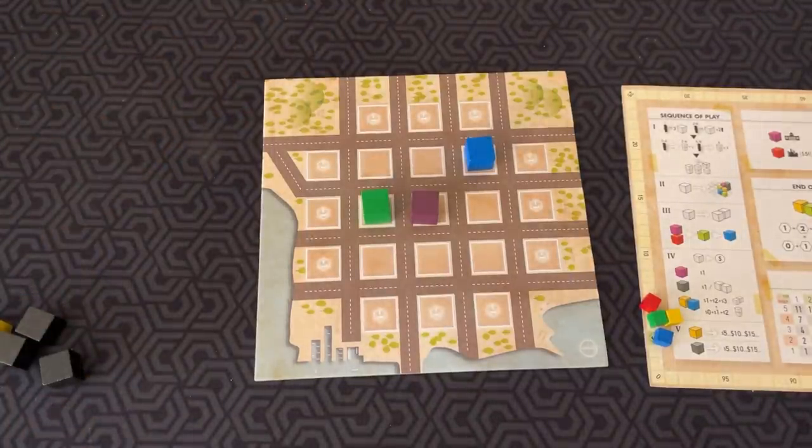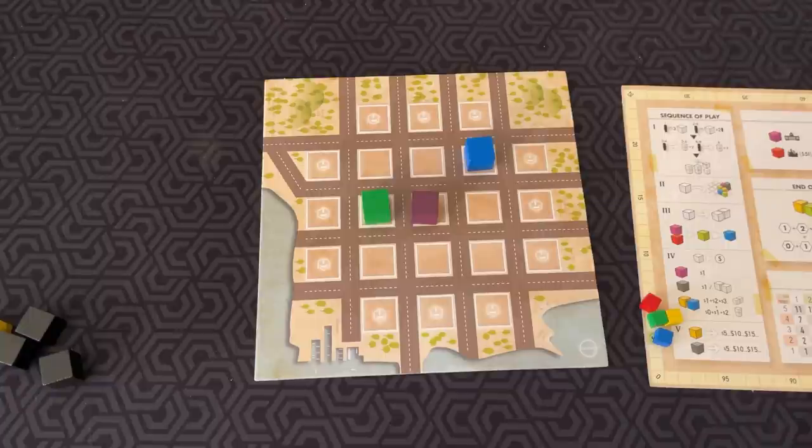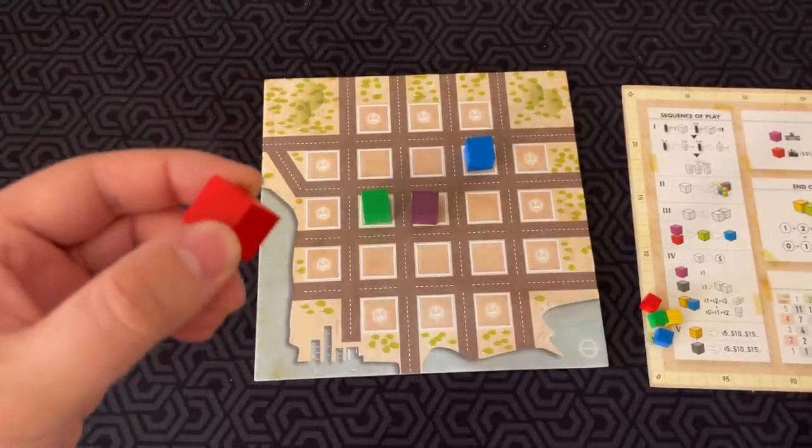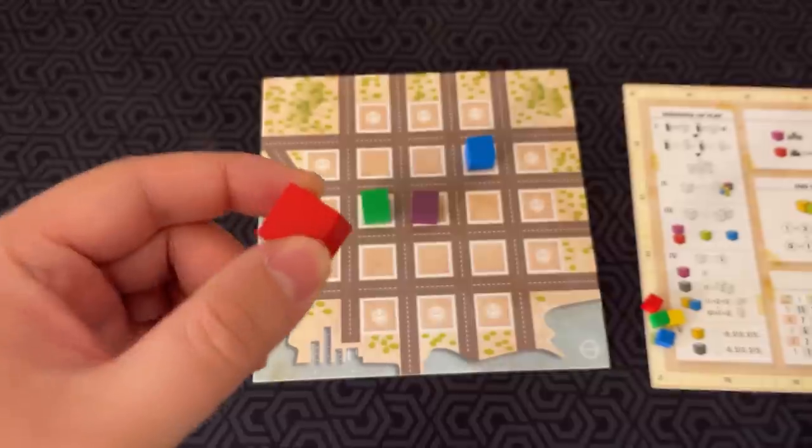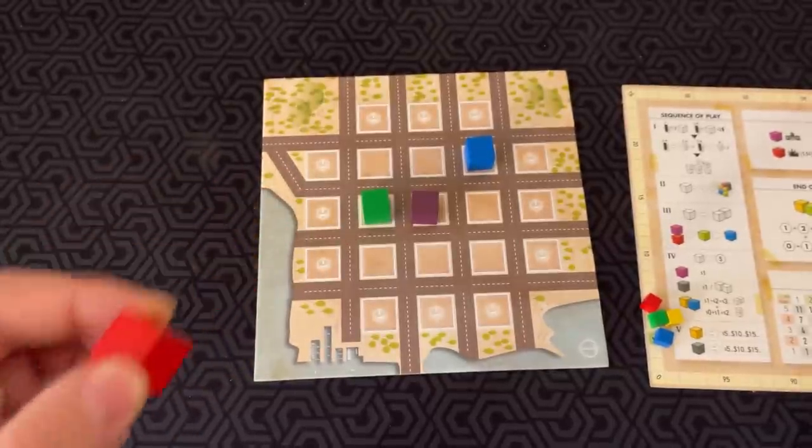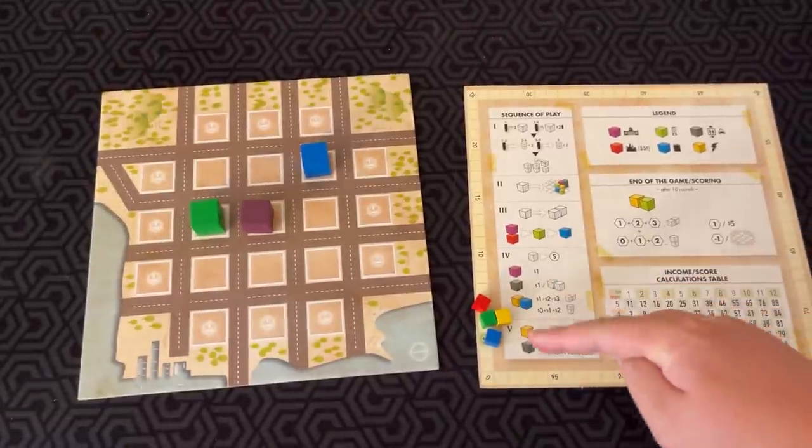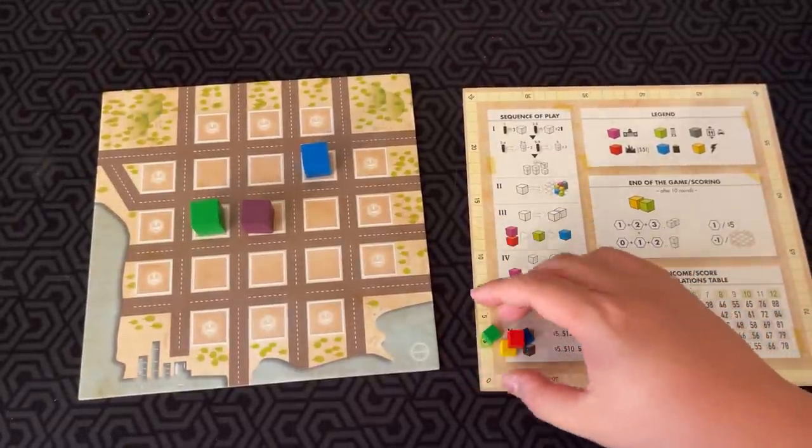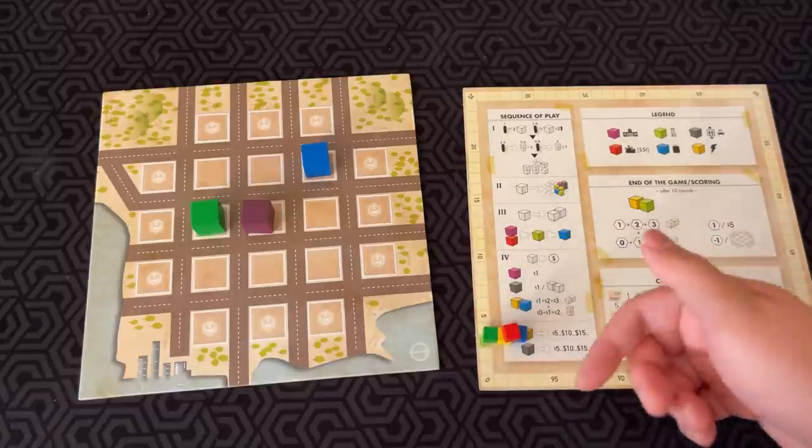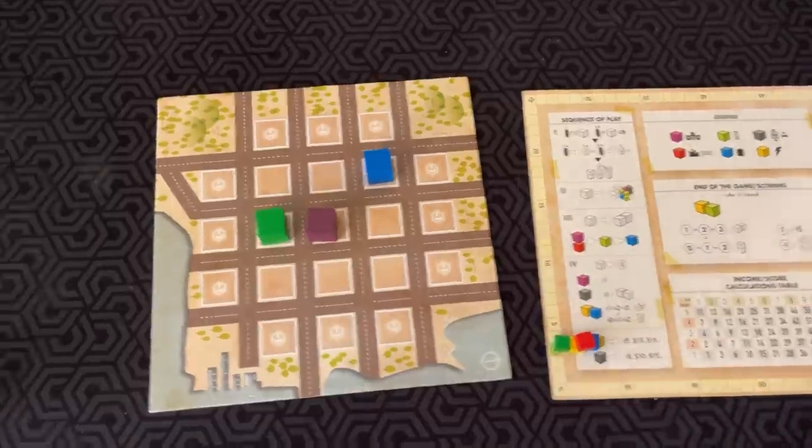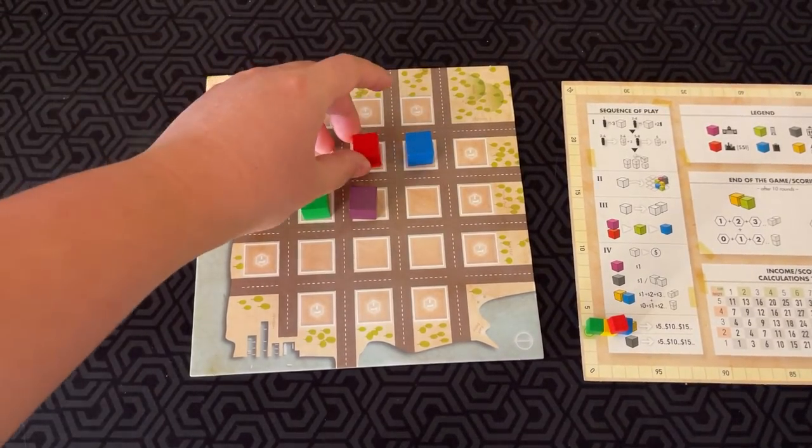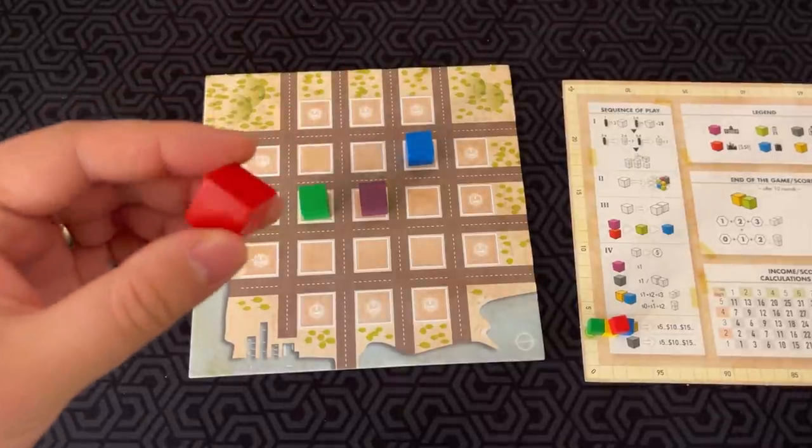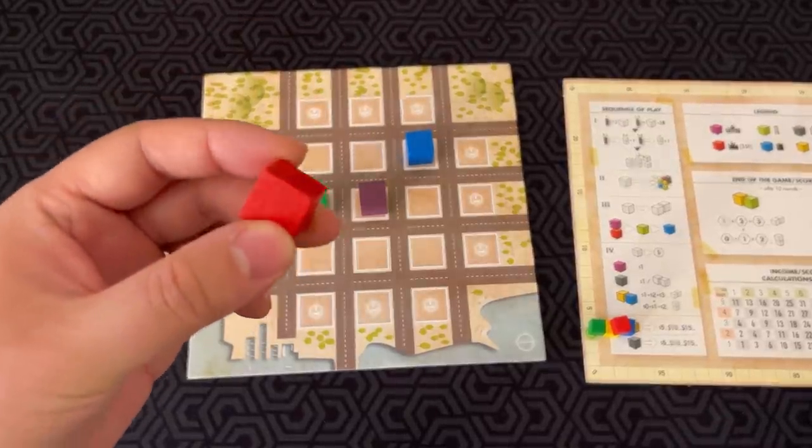Each player would only build two cubes per turn. Office buildings, if you want to build these, you need to pay incentives. When you play an office cube, you must spend five dollars. Your money track is here. Each player starts out with three, so you wouldn't be able to do it yet. If you can't buy an office cube because you can't afford it, you have to throw it away.